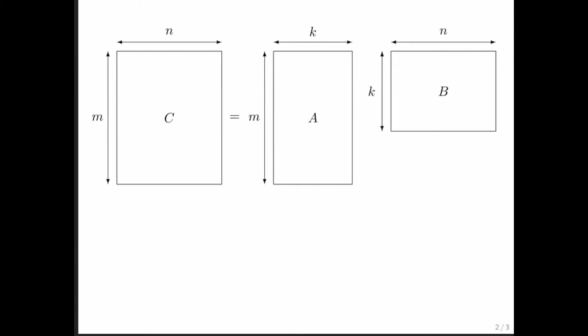We're just going to use this drawing right here of the different matrices. C has m rows and n columns, A has m rows and k columns, and B has k rows and n columns. We're going to determine the cost of a matrix-matrix multiply in a couple of different ways.